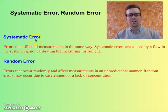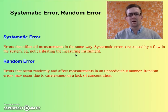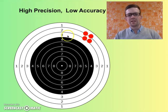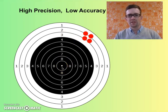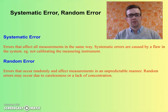Systematic error is error that affects all measurements in the same way. Systematic errors are caused by a flaw in the system — that's a good way to remember them. An example of what would cause a systematic error is not calibrating your measuring instrument, so it's out by the same amount every time. The classic telltale sign of systematic error is high precision but low accuracy — all the results are out by exactly the same amount due to a flaw in the device.